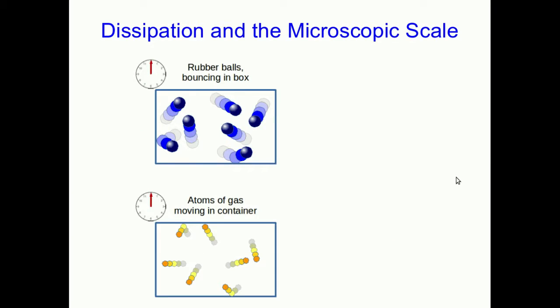To start off, let's think a little bit more about dissipation and see how it actually has to do with length scales and the internal structure of objects. So think about some rubber balls bouncing around inside a box, and for comparison, think about atoms of gas moving in a container. You can certainly picture the rubber balls bouncing in the box, and so we often picture the motion of atoms of gas in much the same way, but there's a very important difference between them.